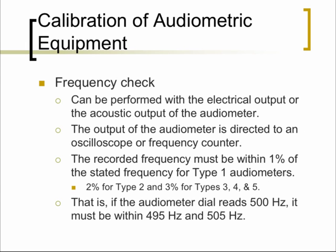For frequency calibration, you check whether the frequency is calibrated for the different buttons used. The recorded frequency should be within 1% of the stated frequency for type 1 audiometers (diagnostic audiometers used in clinical comprehensive evaluations). For type 2 and 3 audiometers used for screening, the permitted frequency deviation is within 2% of the stated frequency. For example, if an audiometer reads 500 Hz and is a type 1, the recorded frequency should be within 495 Hz to 505 Hz.